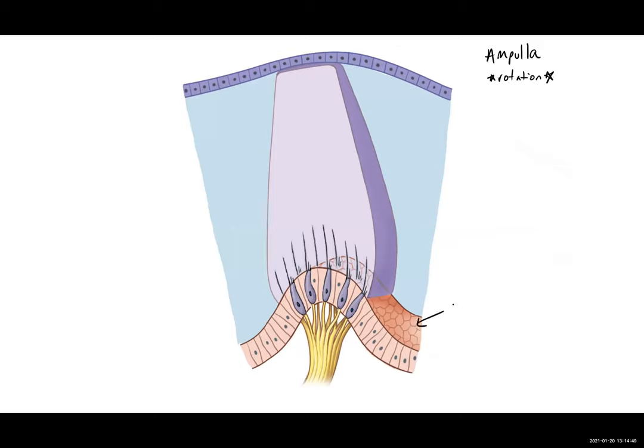We have these epithelial supporting cells and our mechanoreceptor cells called hair cells. They have one super long kinocilium and stereocilia. These hair cells are embedded in what's called the cupula. This fluid is endolymph.